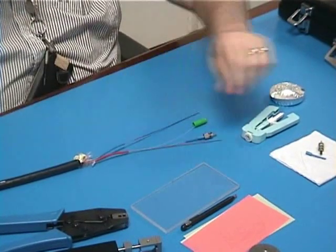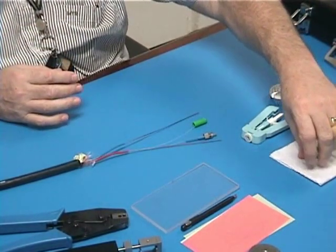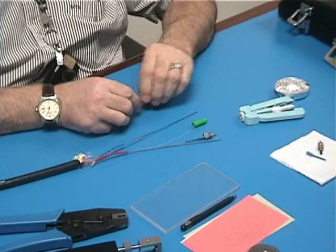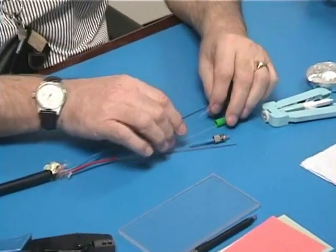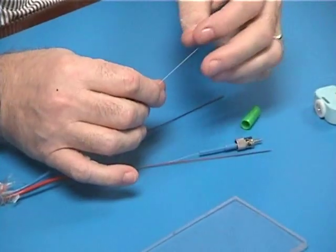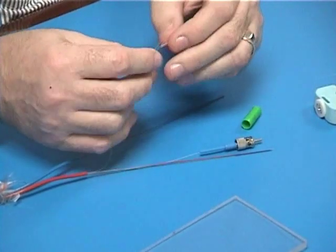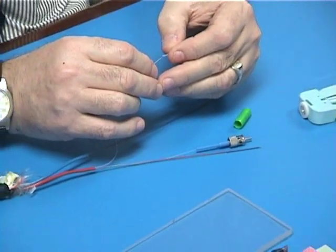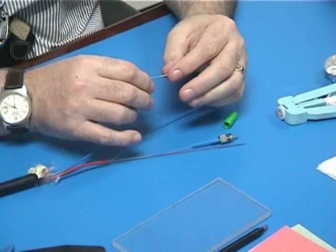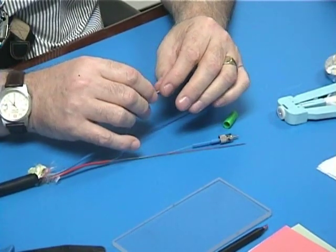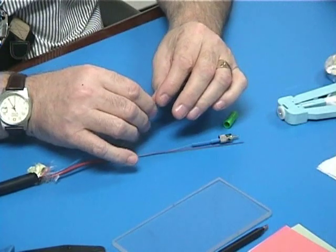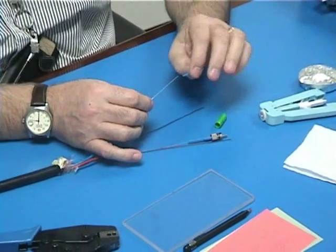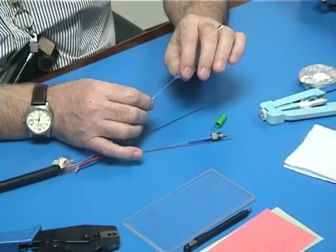So we're going to go ahead and start. If they do not put their own loose tube or what they call fan out, then we provide with each connector a small loose tube that you have to put in. You put that in. You also put the boot like that.